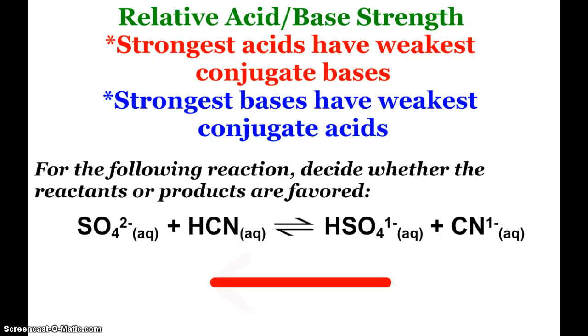So here's a very specific type question. For the following reaction, decide whether the reactants or products are favored. Well, again, in general, our acid-base reactions will go in the direction of the weaker. So you'd have to look at that chart. And when you do, you find that this will be the favored direction. Because hydrogen sulfate is a stronger acid than hydrogen cyanide. And the cyanide ion is a stronger base than the sulfate ion. And you can see that on that chart.